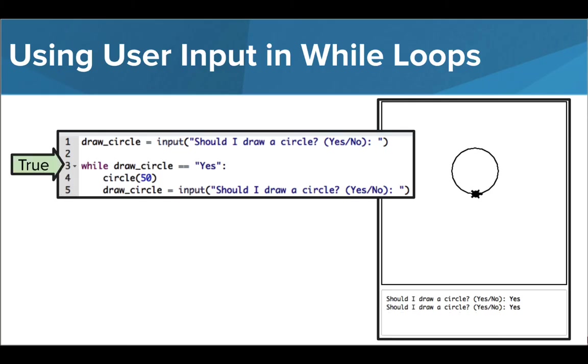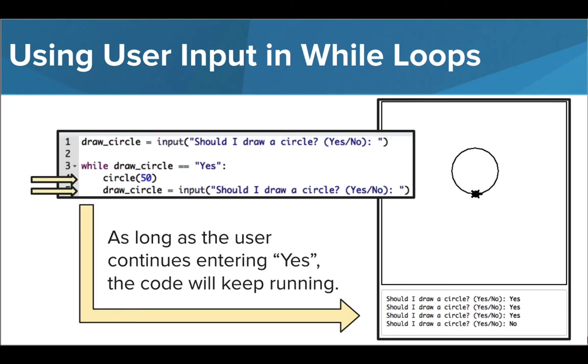The condition is then checked and still found true, so Tracy draws a circle and asks the user again. The condition is still true, so Tracy draws another circle and the user is asked again.